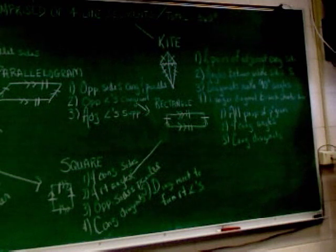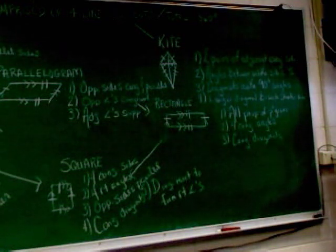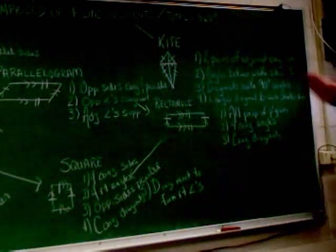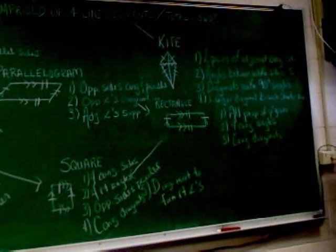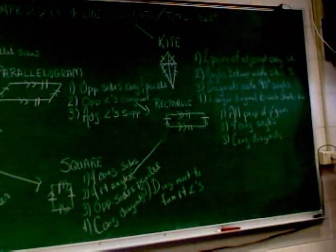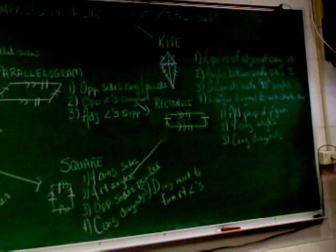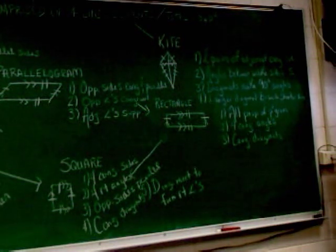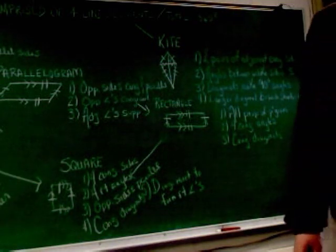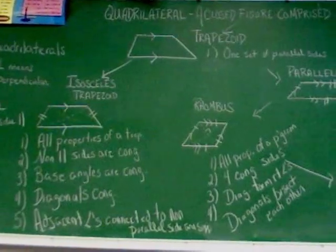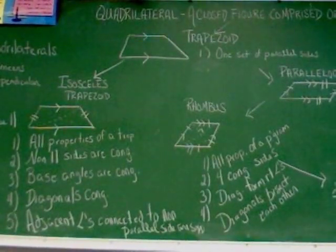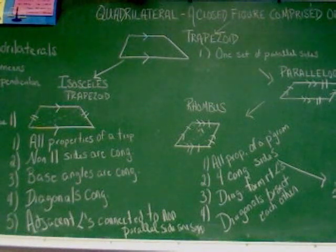And finally, the longer diagonal bisects the shorter diagonal. When we talk about bisecting, that means it cuts it perfectly in half. So this long one that goes up the middle cuts the one that goes from left to right into equal pieces. And that finishes that branch, because there's nothing that comes after kite.